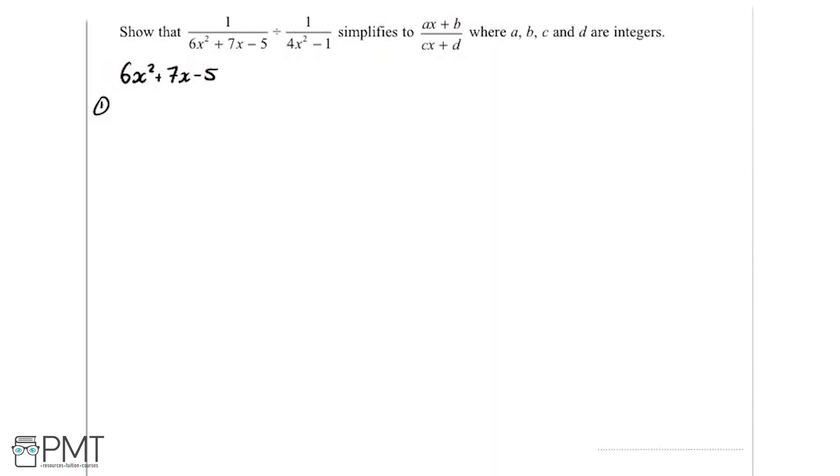So in this case we're going to take the 6 and multiply it by minus 5. So I'm going to do that here. 6 multiplied by minus 5 and that's going to give us minus 30.